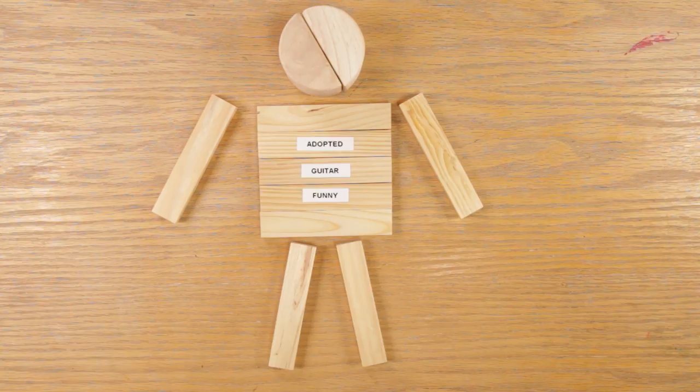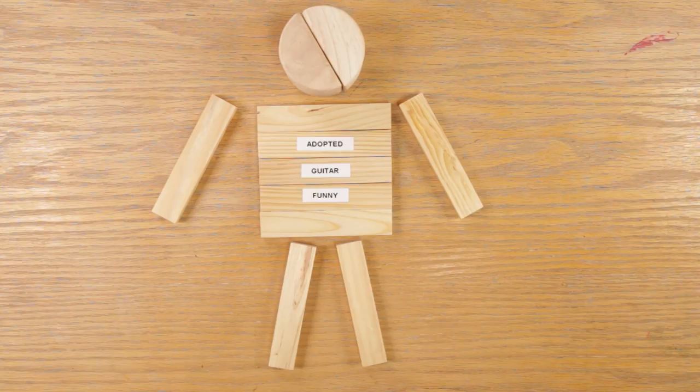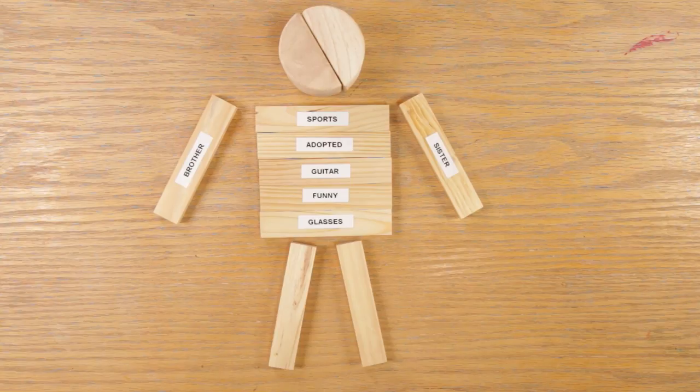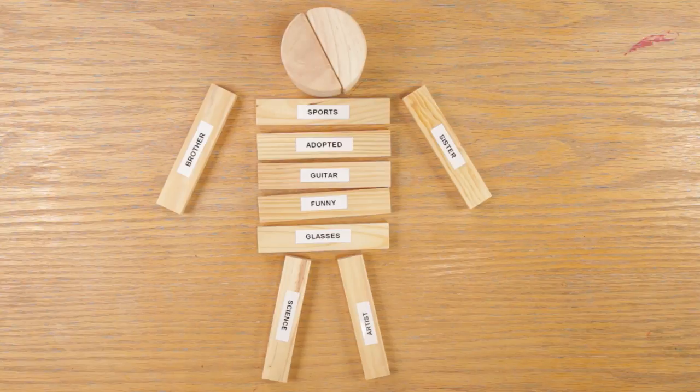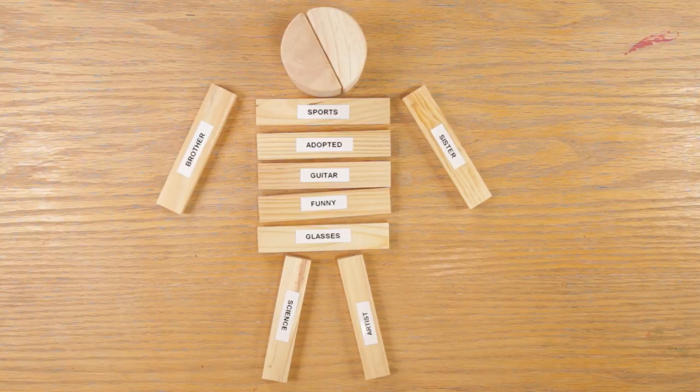That's not who you are either. Maybe you're adopted, or you really like sports, or you wear glasses, or you're a brother or a sister, or you like science, or you're an artist. Those things might all be a part of you, but they're not who you are, because all those little things that are a part of you are just that—one part of you.